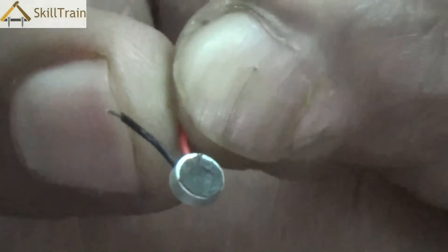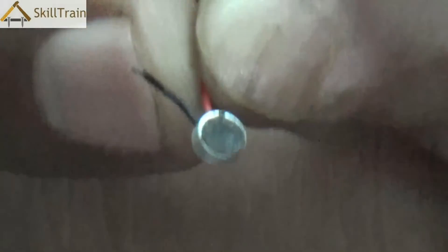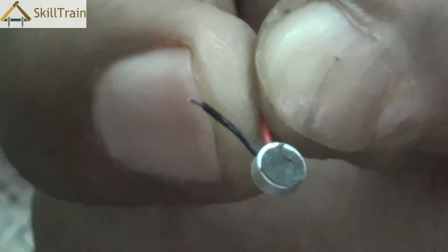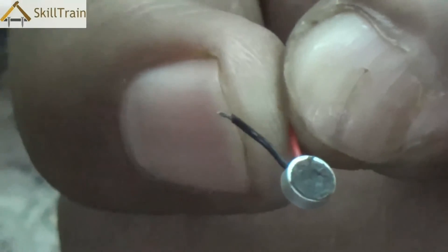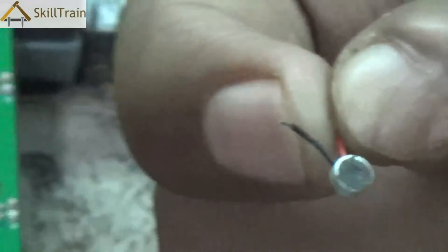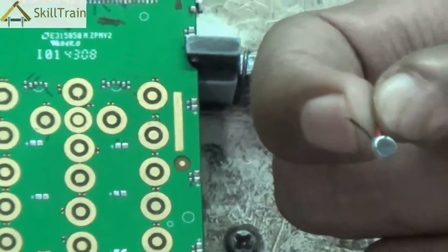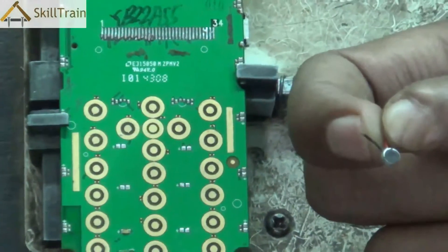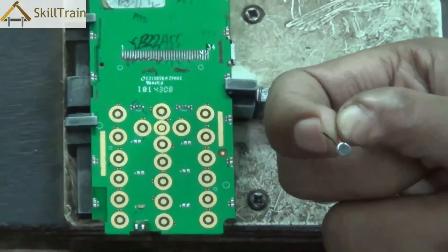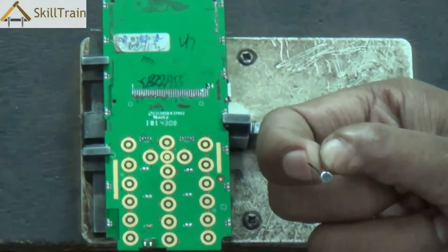Now this microphone cannot be checked using a beep or continuity testing. We did that for components like ringer and a few other components we will see in future videos. However, since the mic doesn't have any coil or anything inside, you cannot check this using a beep or continuity testing.